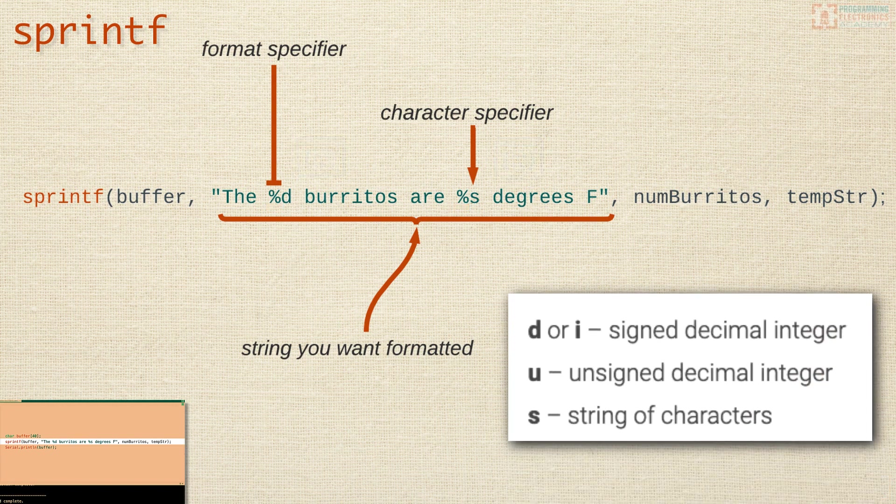So here are some of the common character specifiers. A d or an i is a signed decimal integer. A u is an unsigned decimal integer. And an s is a string of characters.